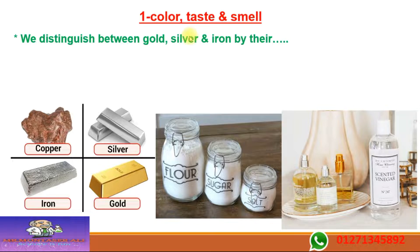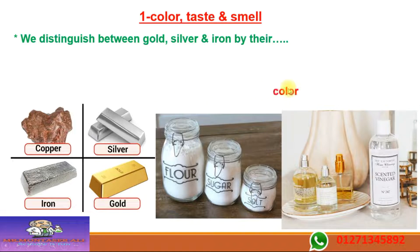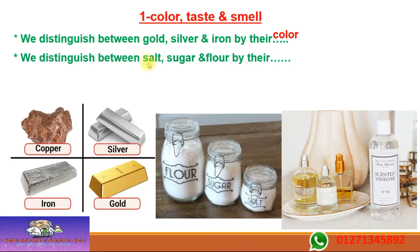Number one: color, taste, smell. For example, we can distinguish between gold, silver, and iron by their color. Can you tell them apart by color, taste, or smell? You would look at their color. Now, can you distinguish between salt, sugar, and flour?